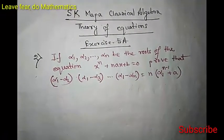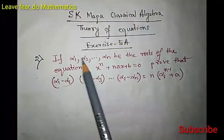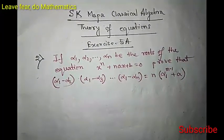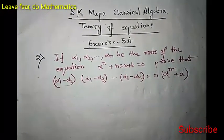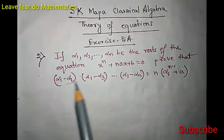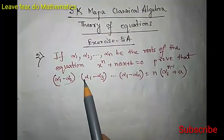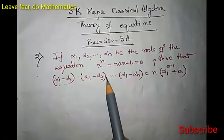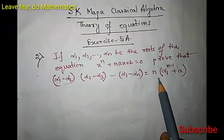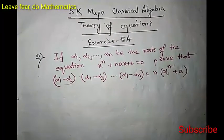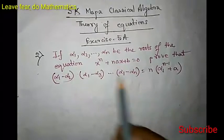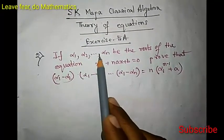Today we are going to solve problem number 2, which says: if α₁, α₂, up to αₙ are the roots of the equation xⁿ + nax + b = 0, then prove that (α₁ − α₂)(α₁ − α₃)···(α₁ − αₙ) = n·α₁ⁿ⁻¹ + a. So we have to prove this.